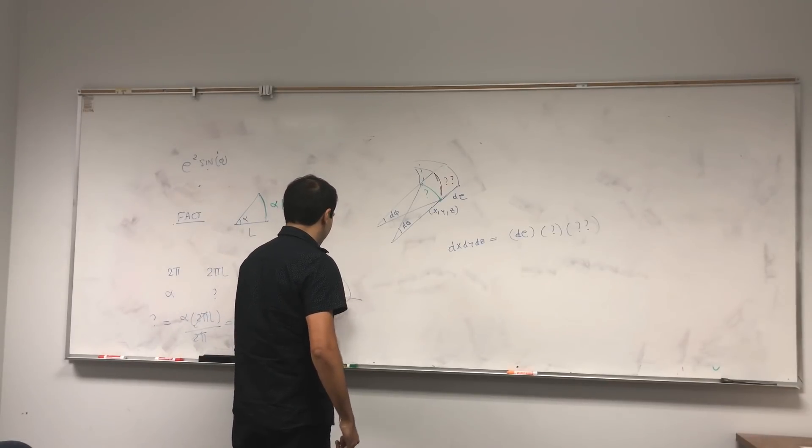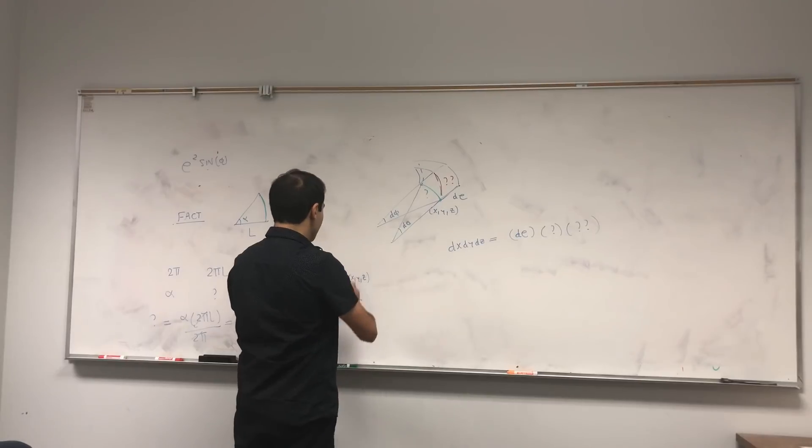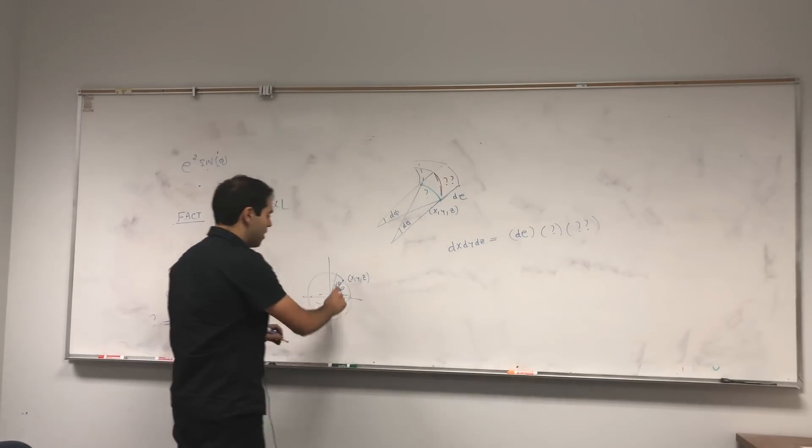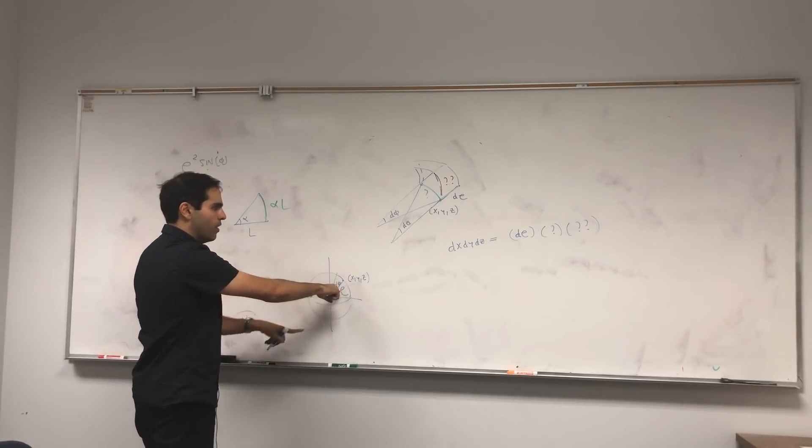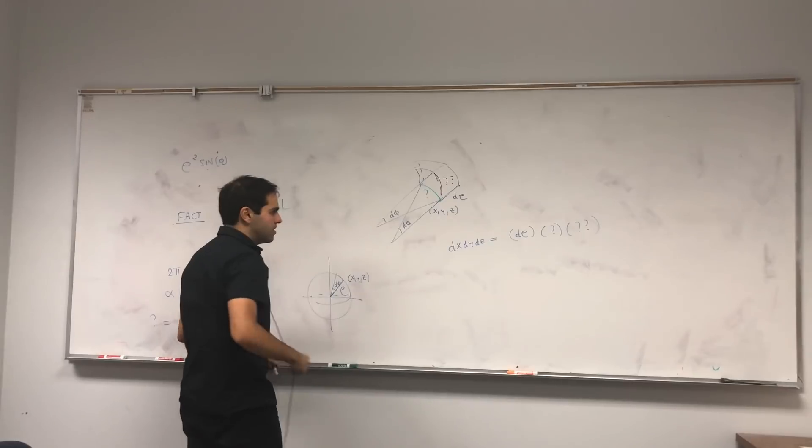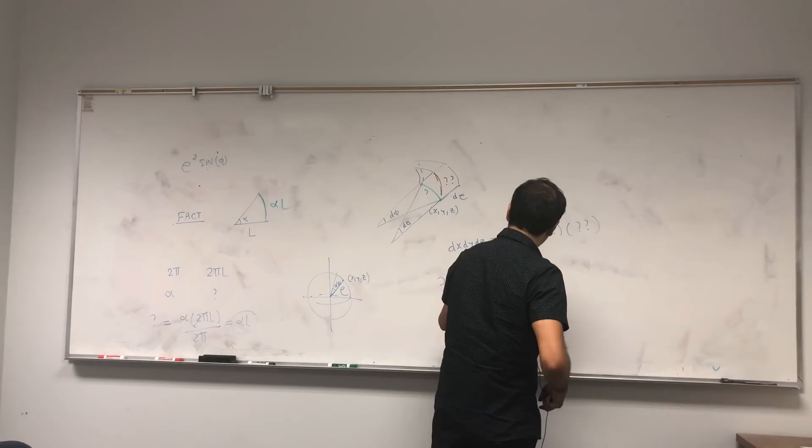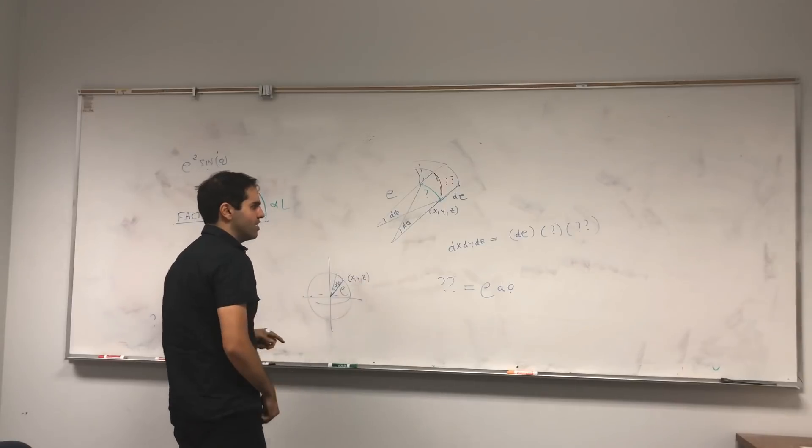So again, suppose we're on our sphere, okay, and we start here at x, y, z, and we move phi a little bit. Then, the angle is d phi, but the length, if you want, is rho, because rho is the distance between zero and that point, and therefore, this opening here, the vertical opening, is simply rho d phi. Because again, you have a length of rho and an opening of d phi. That's why it's rho d phi.